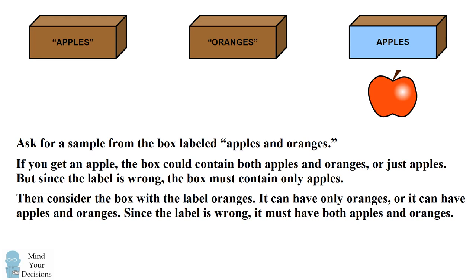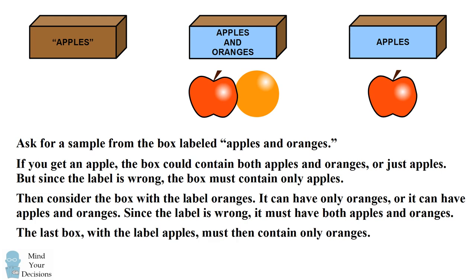So which of these two remaining labels could the box be? Since the label of oranges is wrong, that leaves us the only choice that this box should have the label of both apples and oranges. That means the final box can only have one possible label, which is that it contains only oranges.